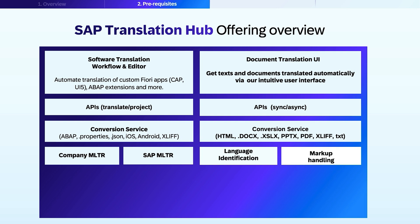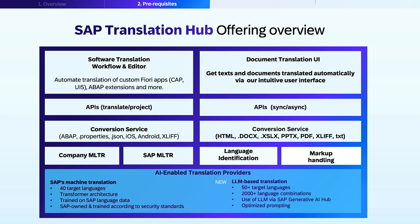Your terminology foundation is built in — use your company MLTR, the SAP MLTR, or Automatic Language Identification and Robust Markup Handling. Under the hood, you get AI-enabled translation providers. SAP Machine Translation supports 40 target languages, uses the transformer architecture, and is trained on SAP language data with the best security standards. A new large language model-based option adds more than 50 target languages and over 2,000 language combinations. You can access LLMs through the SAP Generative AI Hub with optimized prompting. Together, these capabilities let you translate software and documents at scale, reuse approved terminology, and integrate cleanly with your existing pipelines.